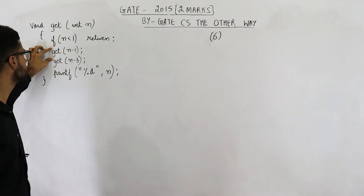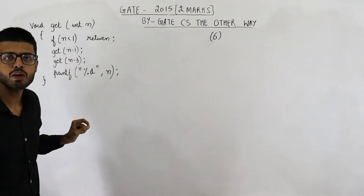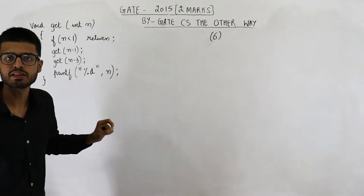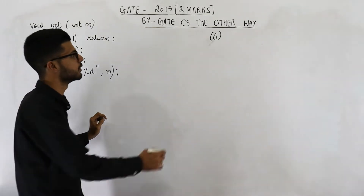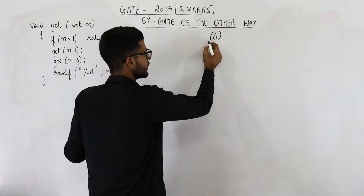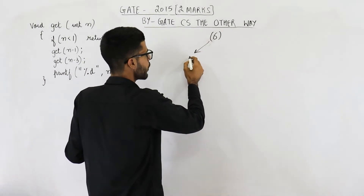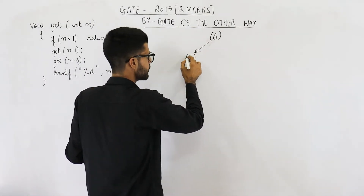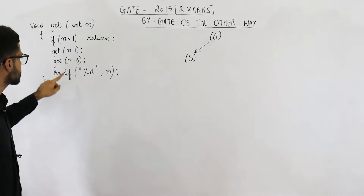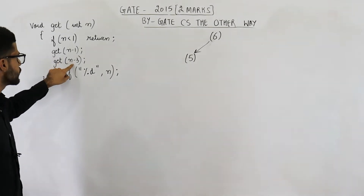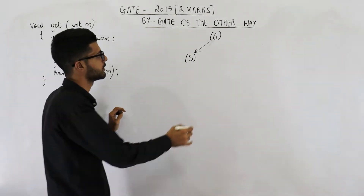The next line is a function call and the parameter that we are passing is n minus 1, that means 6 minus 1. So next time the function is called with 5 as parameter. And in the next line, again this function is called with n minus 3, which is 3, as parameter.